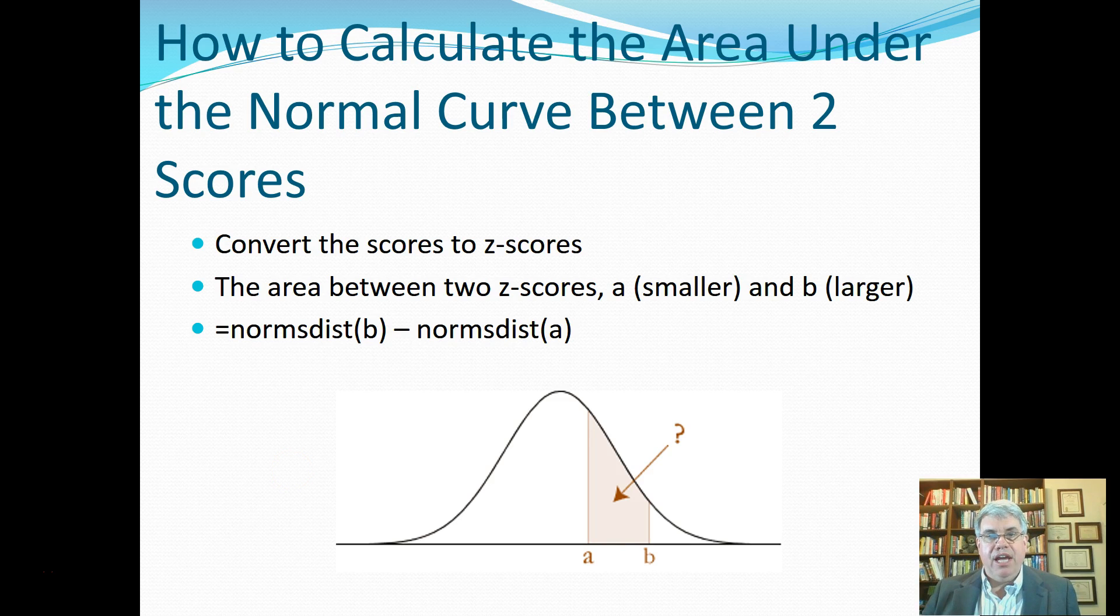Let's look at how we can calculate the area under the normal curve that's between two scores. For example, here we've got two scores, A and B. So it looks like both A and B are above average because they're to the right of the mode or the average of the symmetrical bell curve. B is a lot higher than A.